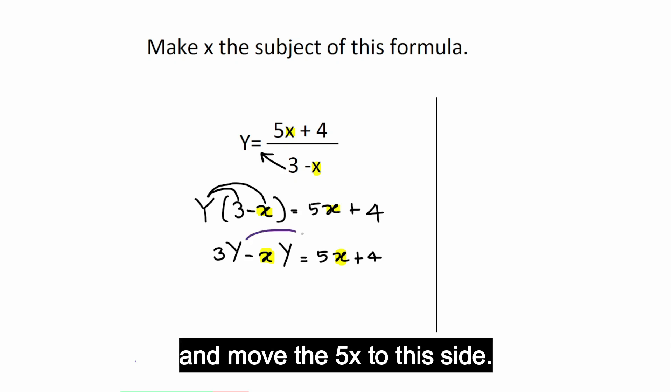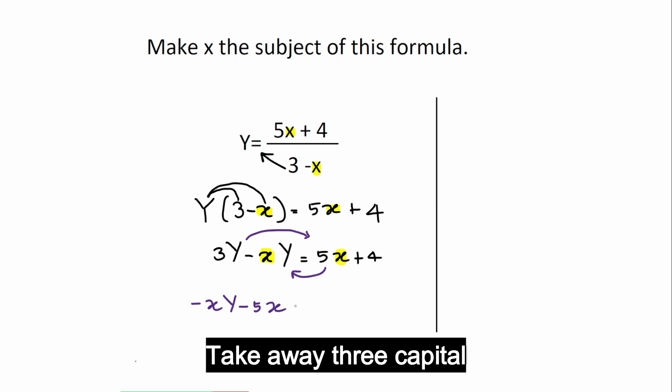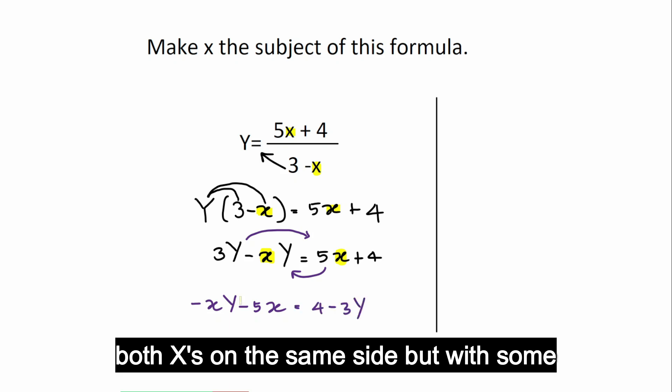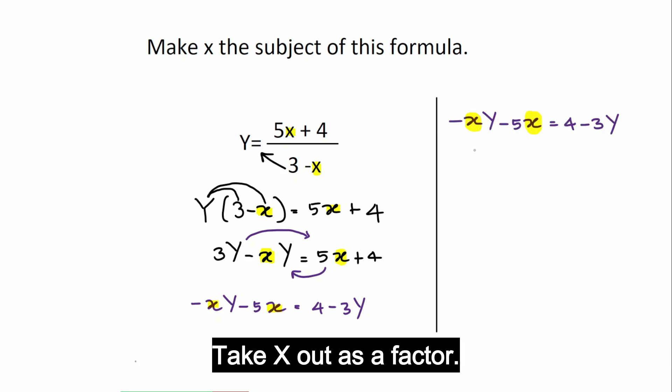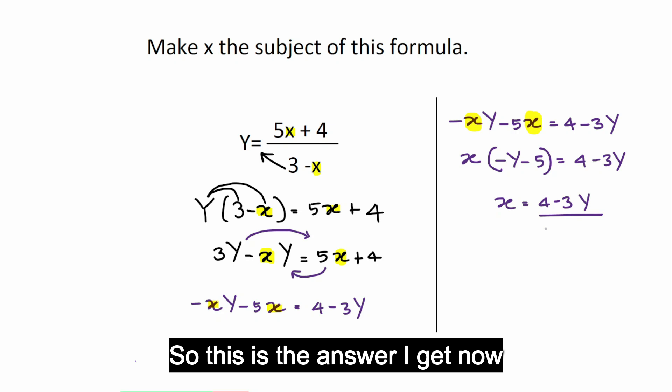Now, let's go down that path and do this. Let's move the 3y to the other side and move the 5x to this side. Negative xy take away 5x is equal to 4 take away 3 capital Y. Now, extract my x's. I got both x's on the same side but with some negative sign here. Let's do the same thing like before. Take x out as a factor. I only take x out. Negative y remains. Negative 5 here remains is equal to 4 take away 3y. Divide both sides by that. I have x is equal to 4 take away 3y divided by negative y take away 5.